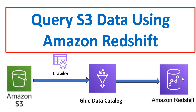To do that, we will be making use of something called AWS Glue Data Catalog. We are going to create a table by crawling through the S3 data using a Glue crawler. The Glue crawler crawls through the S3 data and creates a table in the Glue Data Catalog, and this Glue Data Catalog will be connected to Amazon Redshift so we can run queries from there.